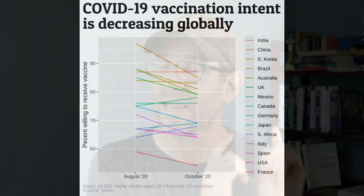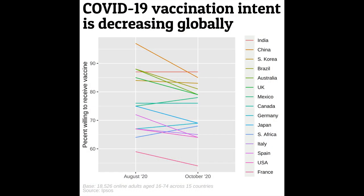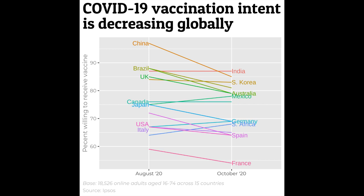Hey friends, in this episode of Code Club, we're going to take this slope plot and convert it into this slope plot. Notice the difference? We moved all that text for those 15 different countries from the right-hand margin into the actual body of the plot so that we can more directly label each of the 15 lines.